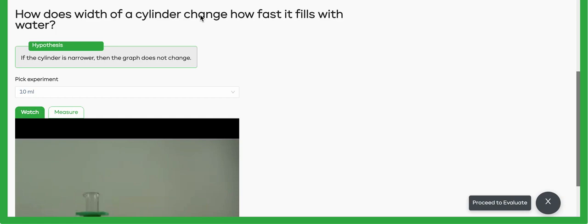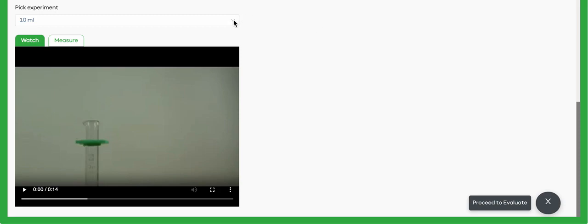Consider this question: How does width of a cylinder change how fast it fills with water? Once you've either written or picked a hypothesis you'd like to test, come down to the bottom, pick one of the four cylinders in terms of size that you'd like to try, and press the play button to watch that cylinder being filled up with water.